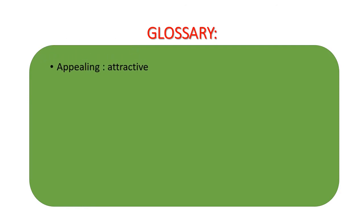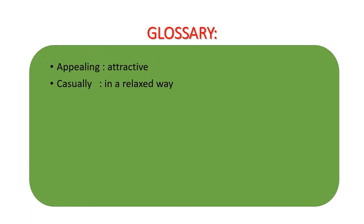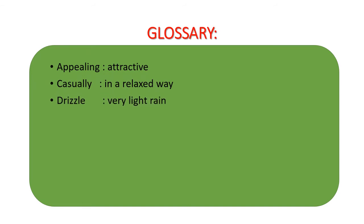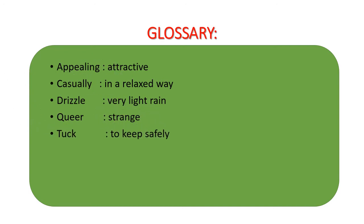Let us see some of the difficult words from the chapter. First, 'appealing', which means attractive. Then 'casually', which means in a relaxed way. Then we have the word 'drizzle', which we all know is a very light rain. Then the word 'queer', which means strange. Then we have 'tuck', meaning to keep safely.